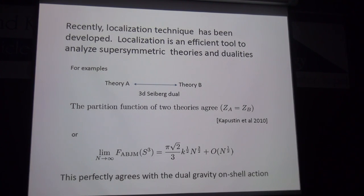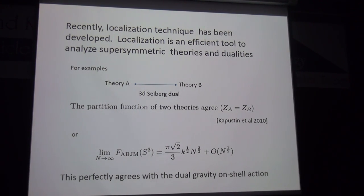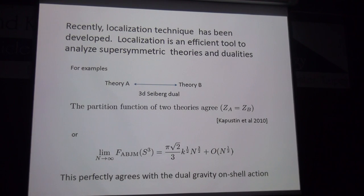In general, it is difficult to check these dualities, but localization techniques have been developed and are very efficient for this purpose. For example, if theory A and theory B flow to the same IR fixed point, their partition functions must agree, and by using localization we can explicitly check this statement.